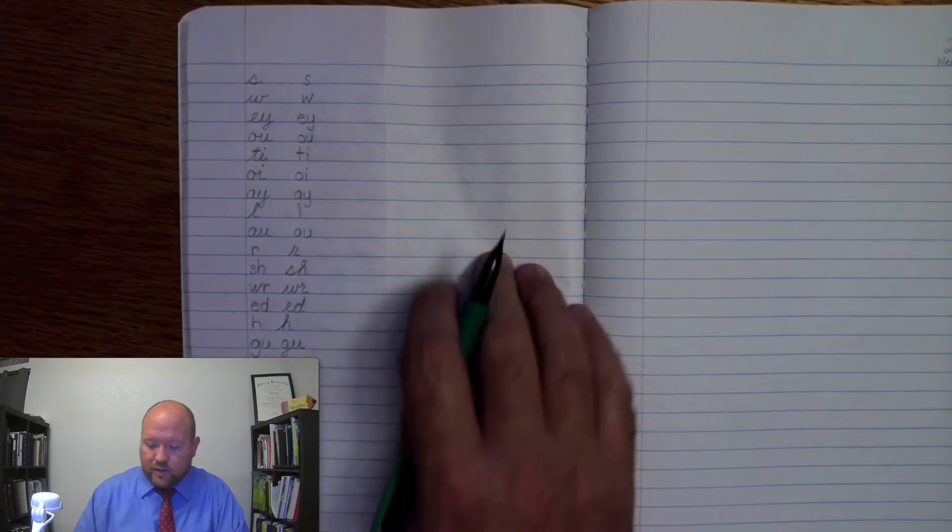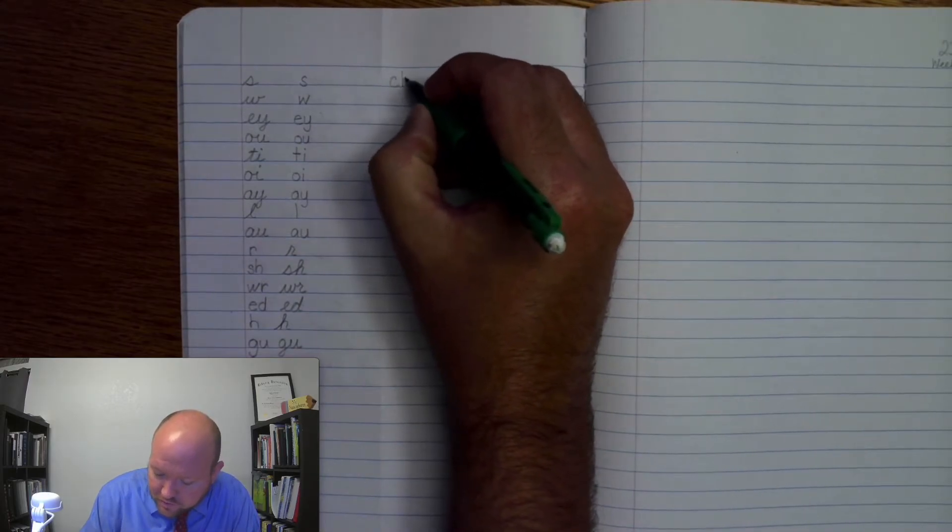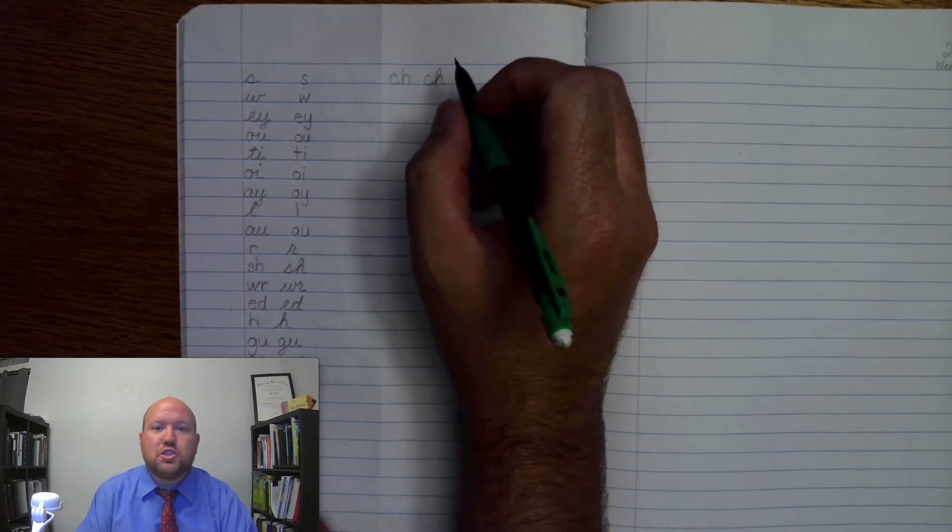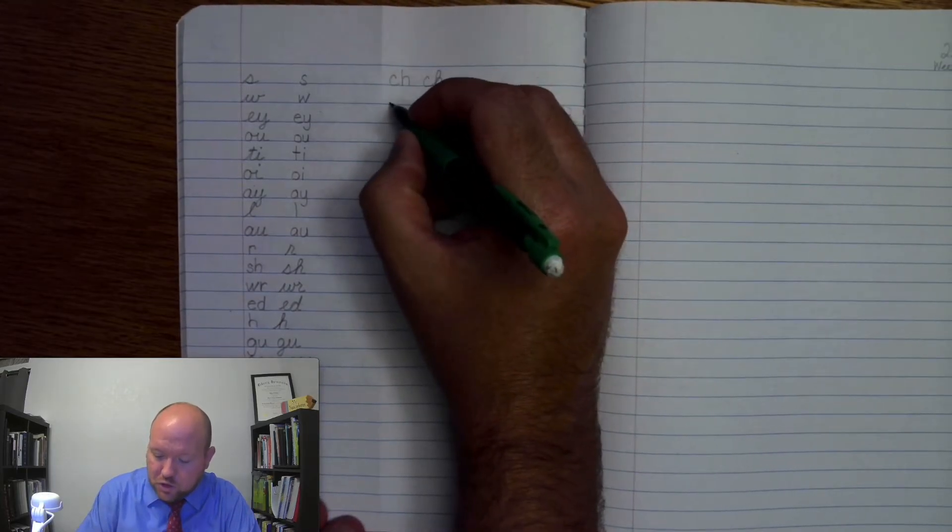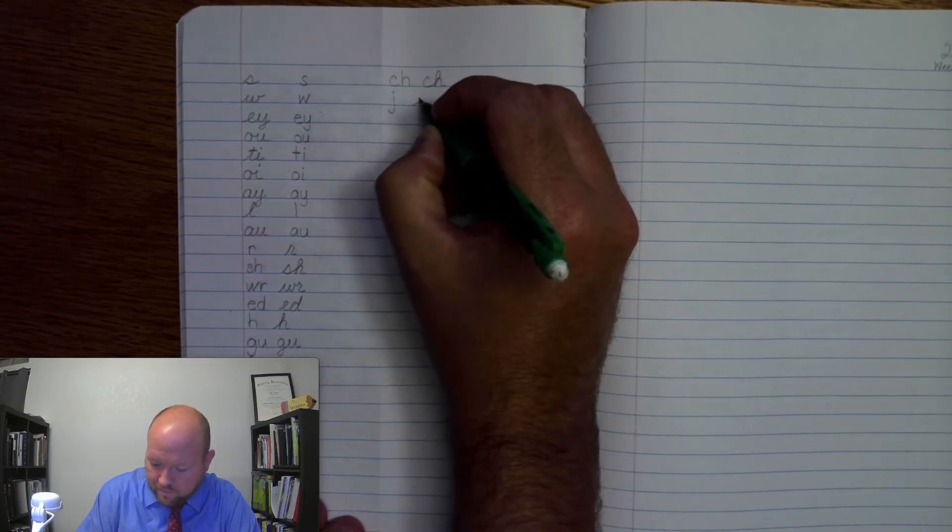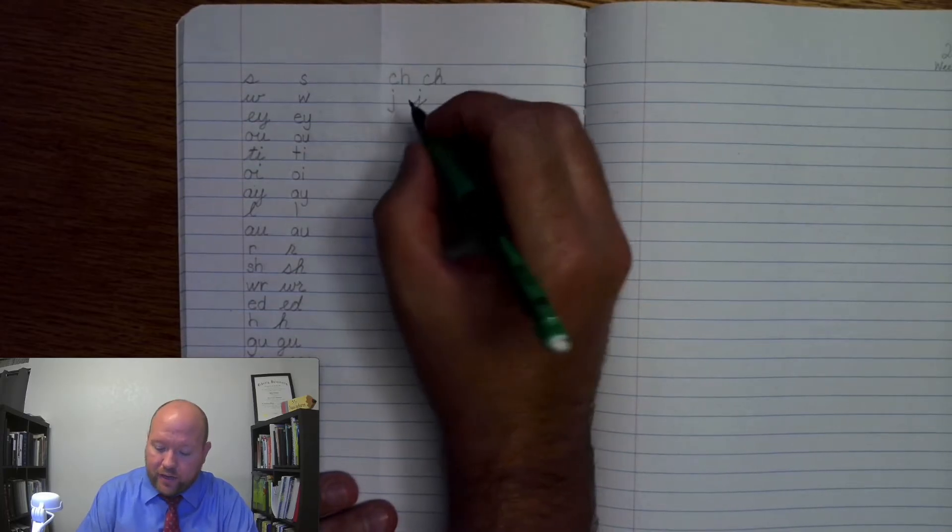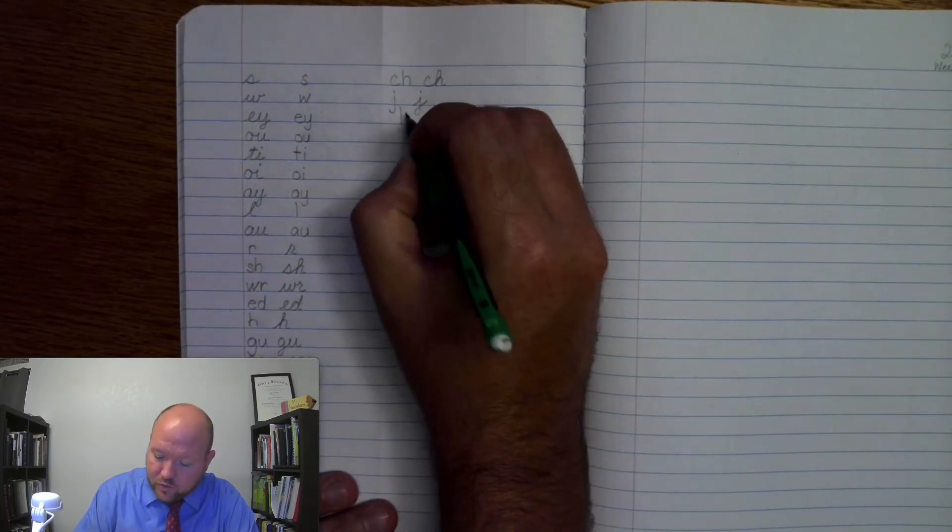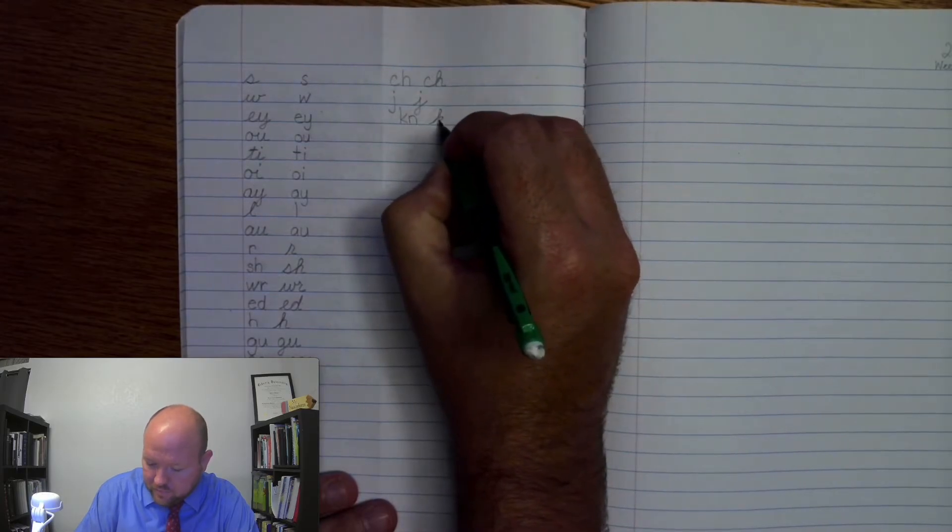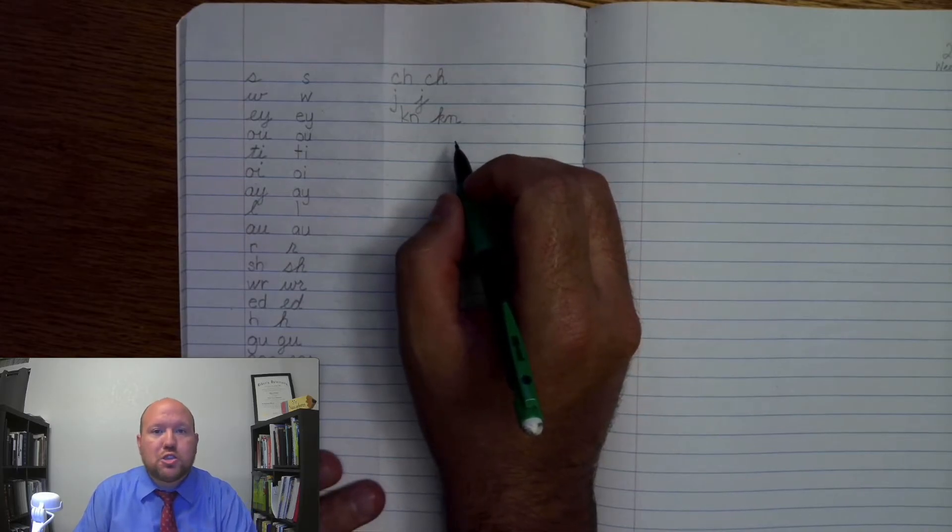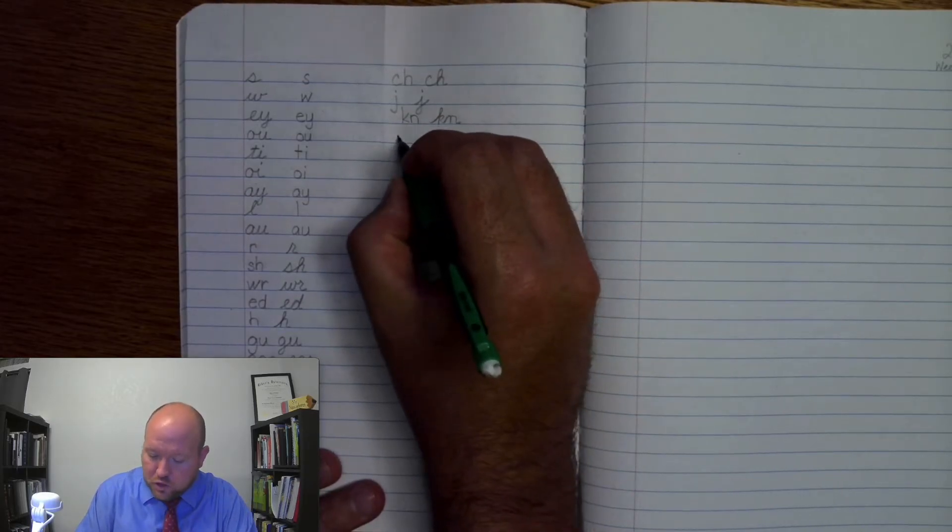First one is ch, k, sh. Write it and then look up to see if you get it right. Ch, k, sh. First one is ch, sh. Next one is ch, k, j, j, j.